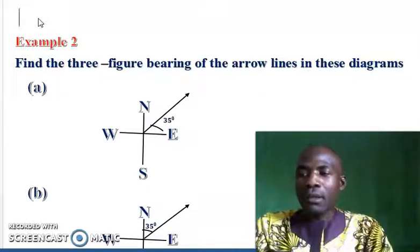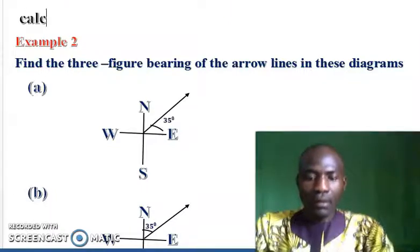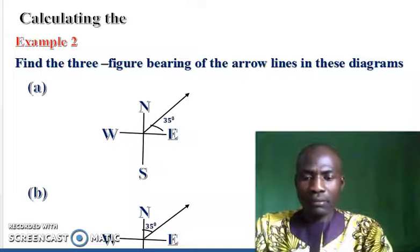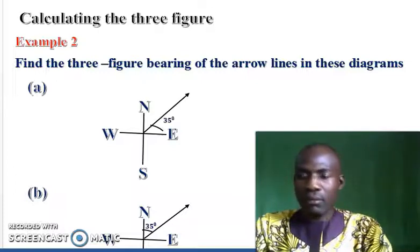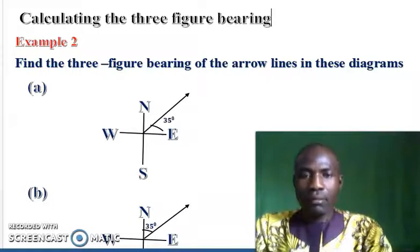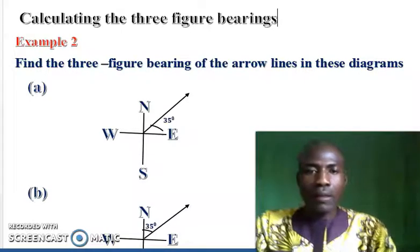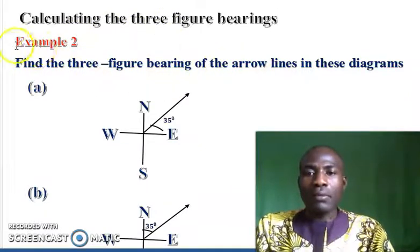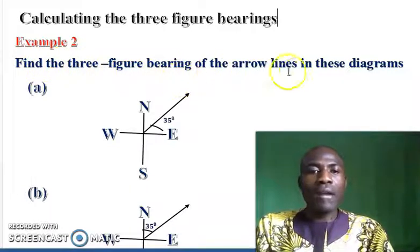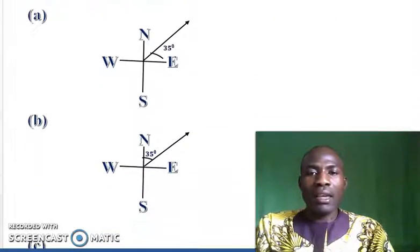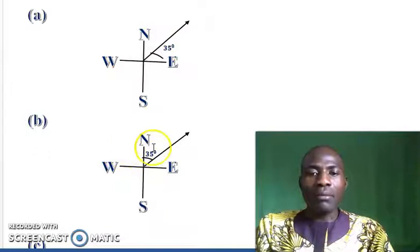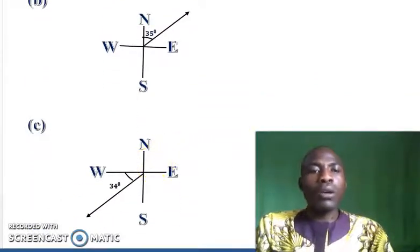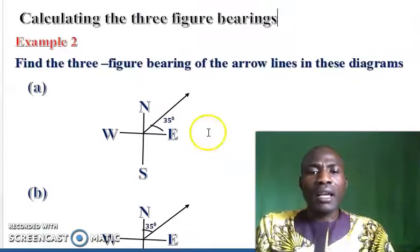Alright, calculating the three-figure bearing. Let's quickly take some examples on how to calculate a three-figure bearing. Example two: find the three-figure bearing of the arrow lines in these diagrams. We have diagrams A, B, and C, and we are asked to find the three-figure bearing for each one. Let's quickly take the solutions.